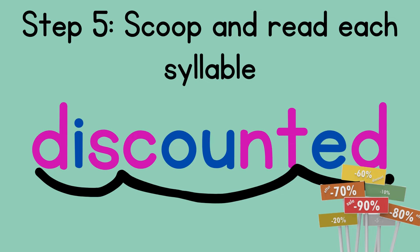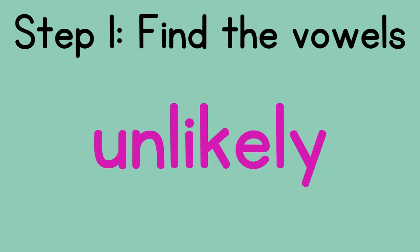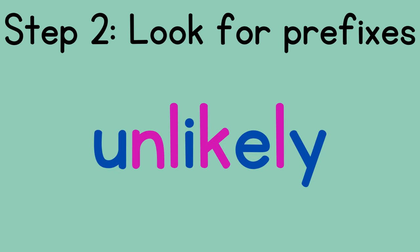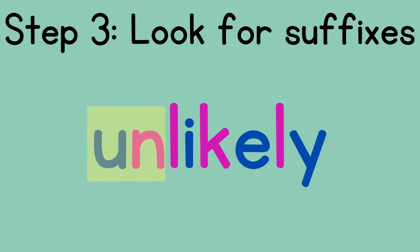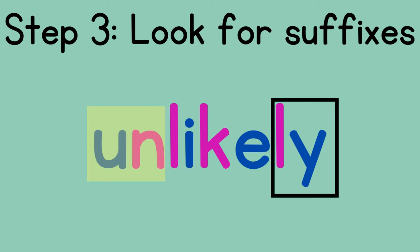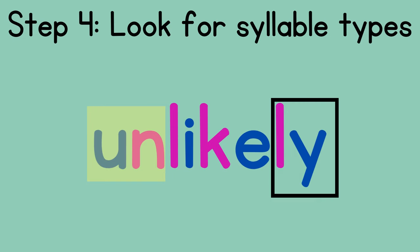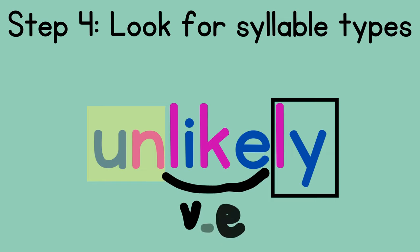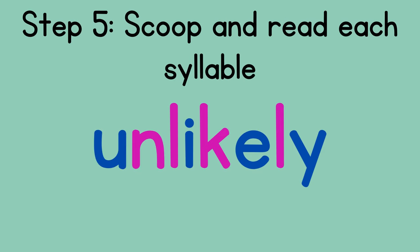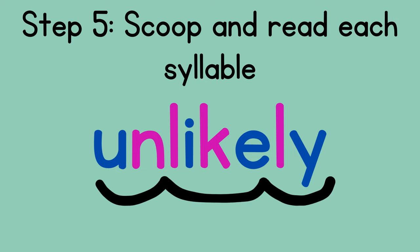You're doing great, let's keep going. First, find the vowels. This word has the prefix 'un.' Third, look for suffixes — there's the suffix 'ly.' Fourth, look for syllable types. We just have the base word — it's a magic E or vowel-consonant-E syllable. Lastly, scoop and read: un-like-ly — unlikely.